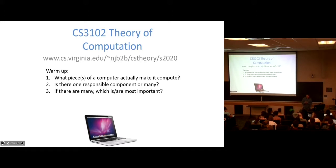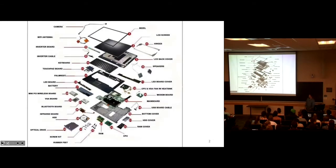So I want you with the people around you to discuss what pieces of a computer actually make it compute. Is there one responsible component or are there many components that we need in order to say that the computer computes? And if there are many, I want to know which ones do you think are the most important? Or is there a singular piece that you think is absolutely the most important piece of a computer? So discuss that with the people around you. To help, here is an exploded view of a computer with a bunch of the different parts that are in it.